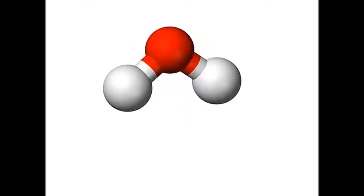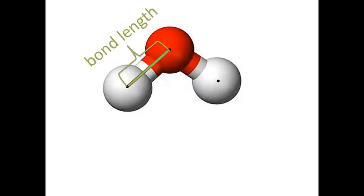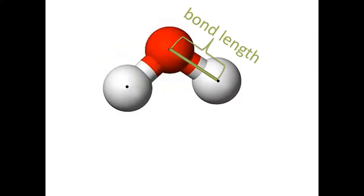Here's a water molecule representation — a slightly more complex molecule. There are three atoms involved in a water molecule, meaning there are two bonds involved, and the distance between each bonding atom is called the bond length. In the case of water, each of the bonds is between a hydrogen and an oxygen atom, and so the bond lengths are equal to one another.